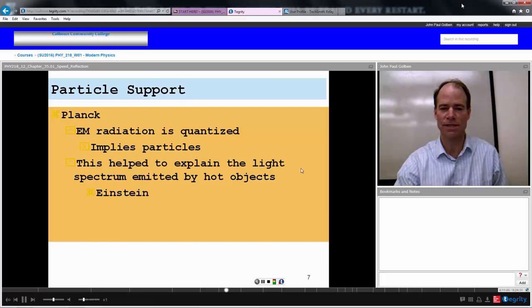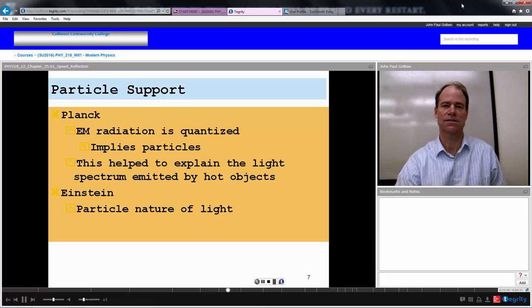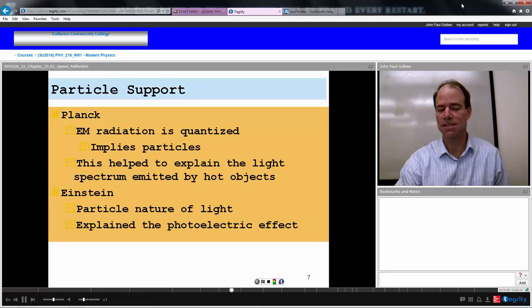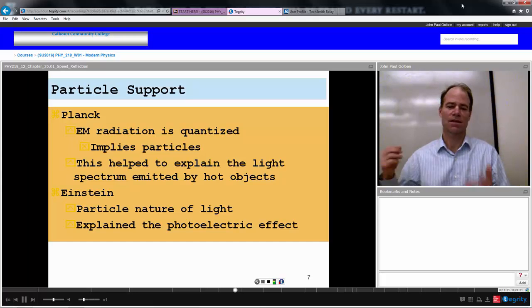Einstein expanded this to light so that light could be thought of as being comprised of these particles, which he called photons. And this helped him explain the photoelectric effect, which was one of his famous papers in 1905. He had four monstrous papers in 1905: the photoelectric effect, Brownian motion and two papers on special relativity. Probably 1905, the greatest year any scientist ever had was these four papers by Einstein. He got the Nobel prize for explaining this photoelectric effect.